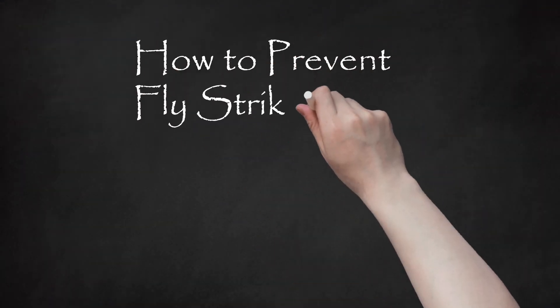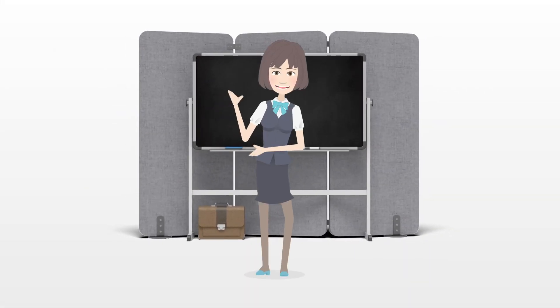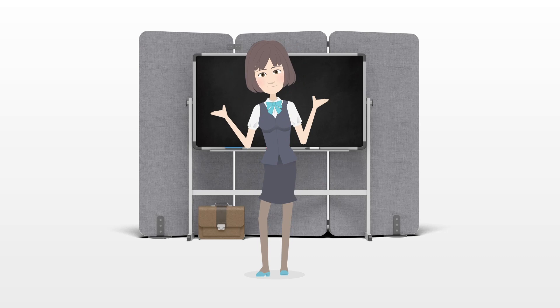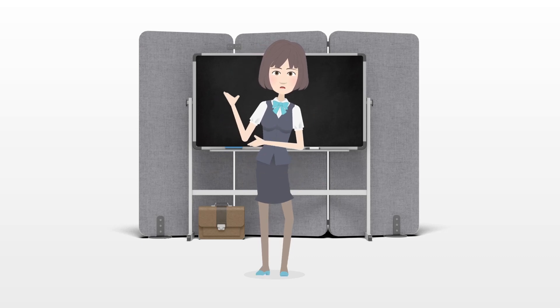How to prevent fly strike in rabbits. Fly strike is an unpleasant and potentially deadly condition caused by fly eggs on a rabbit hatching into maggots and eating the rabbit's flesh.